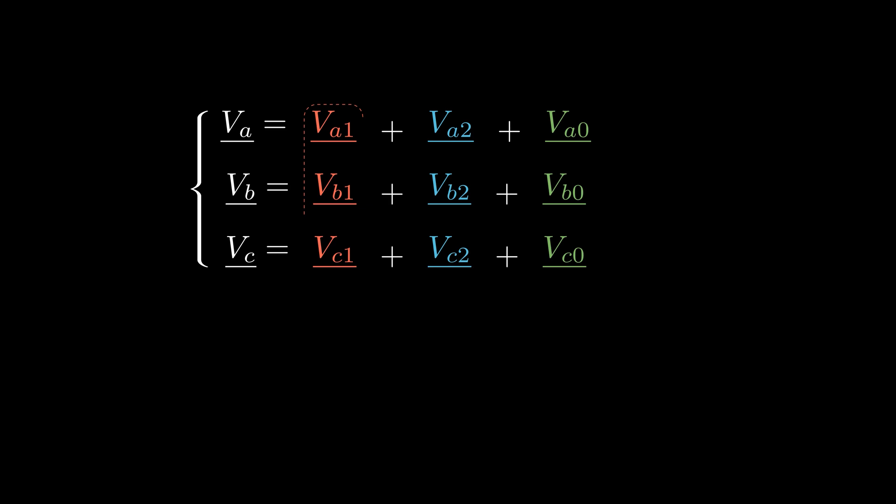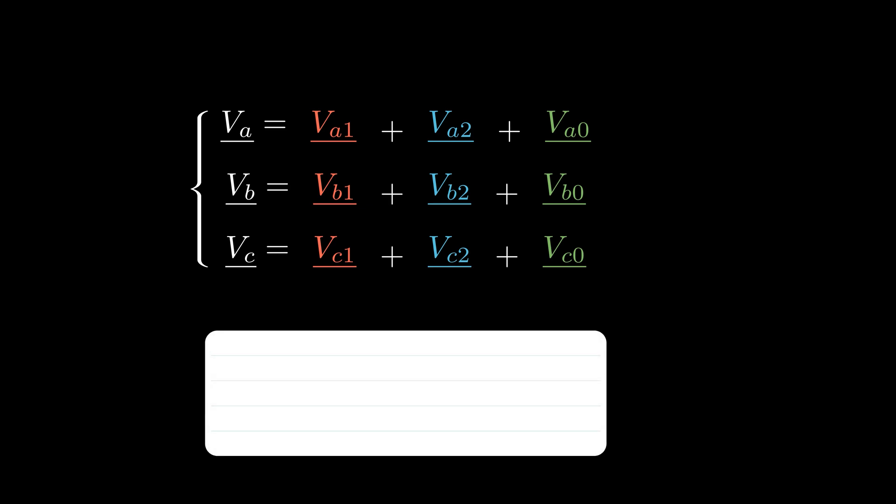We'll start by expressing the three unbalanced voltages as the sum of three components. The first corresponds to the positive sequence, the second to the negative sequence, and the third is the zero sequence. Now let's find a concise formulation for these equalities. We know that phase B of the positive sequence is identical to phase A but lags by 2π/3. We can then replace in the equations phase B. Similarly, phase C is the same as phase A but leads by 2π/3. We can then replace phase C in the equations.